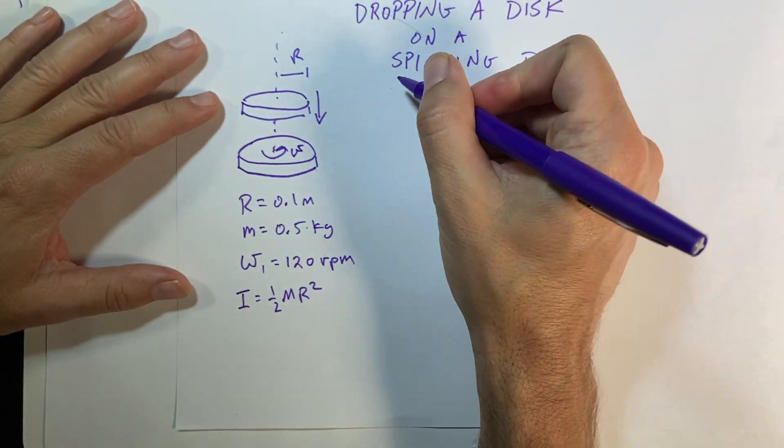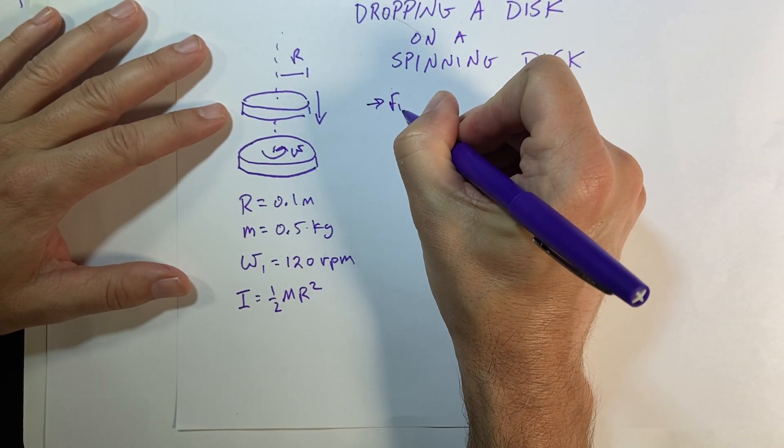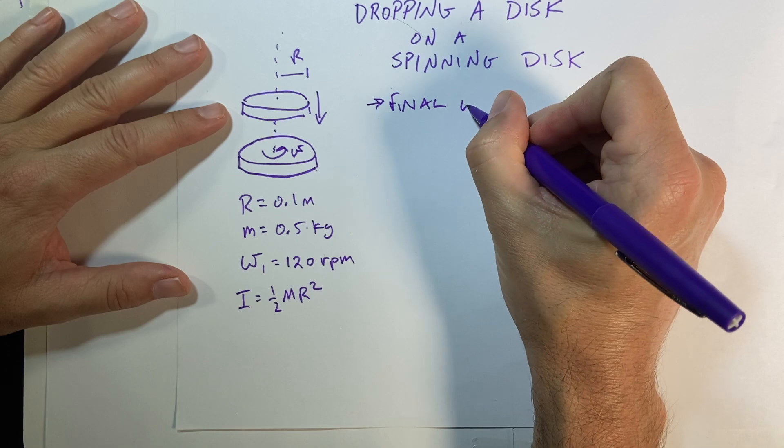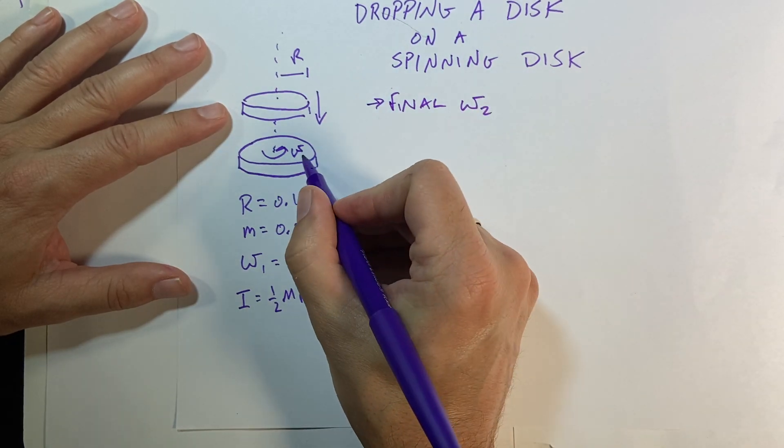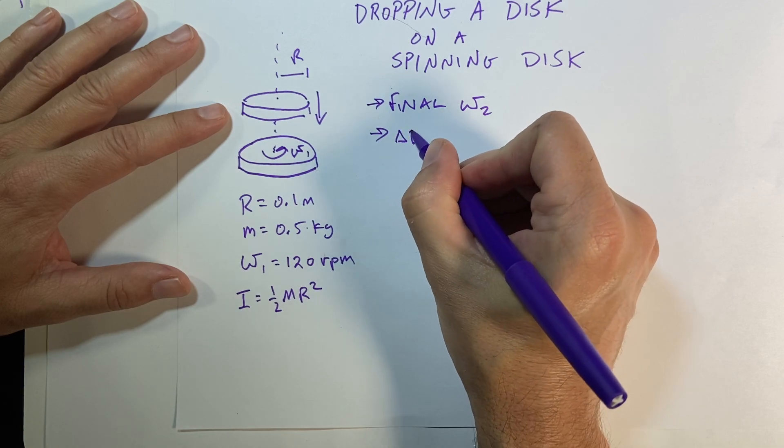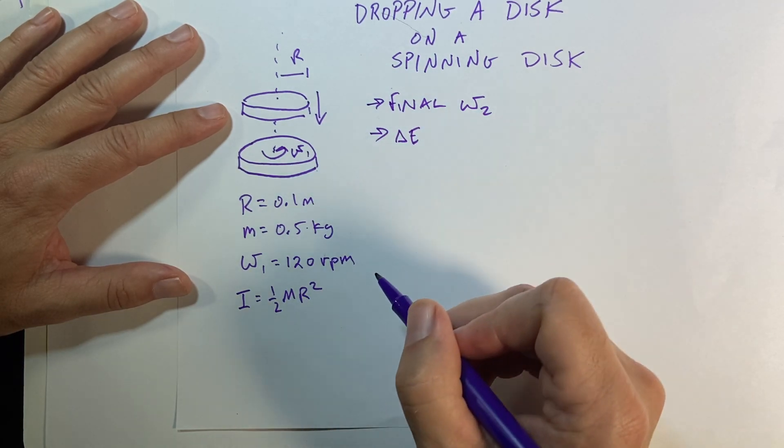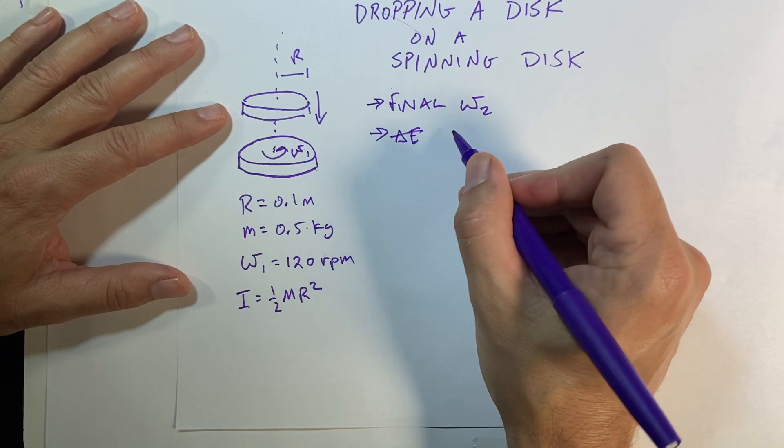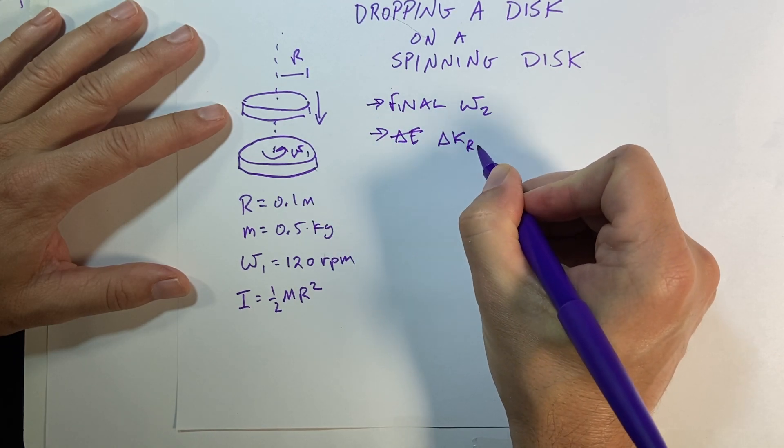And so I want to find out a final angular velocity. So we'll call it omega 2. We'll call that omega 1. Change in kinetic energy. Change in, let's call it, change in rotational kinetic energy.